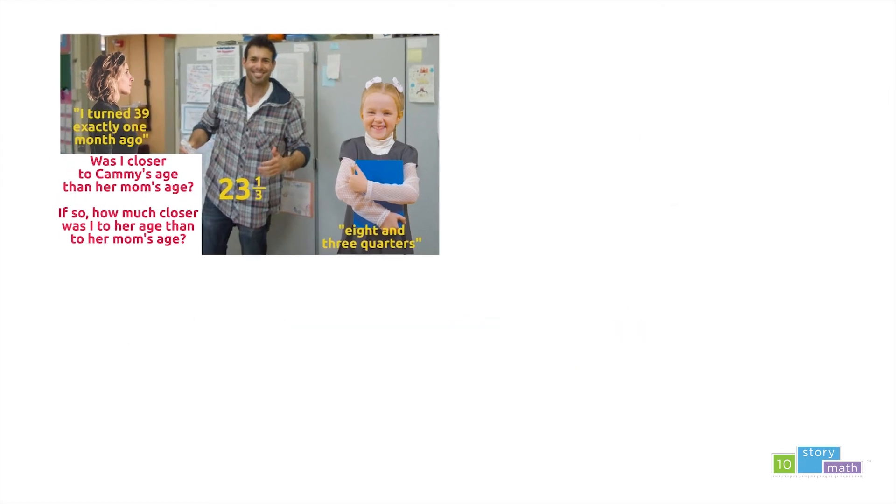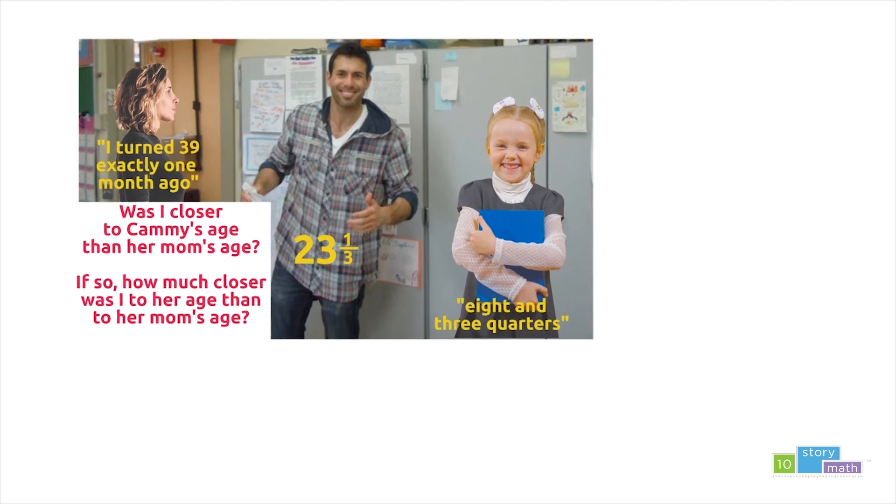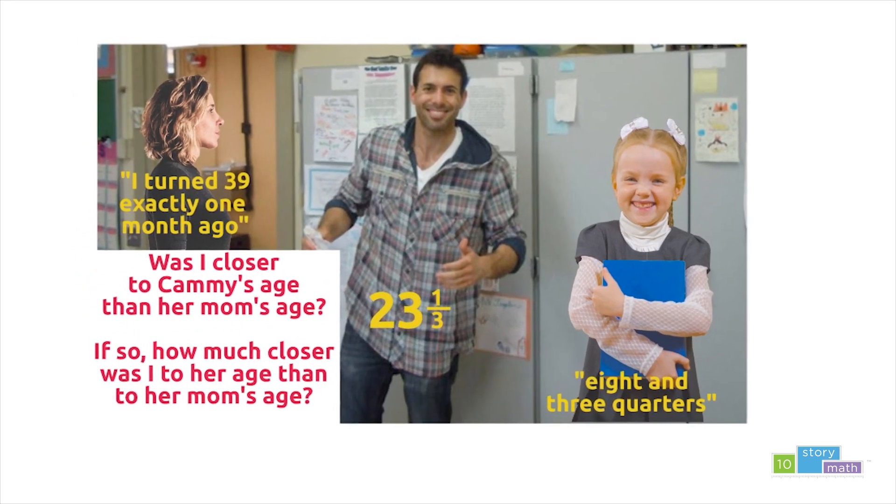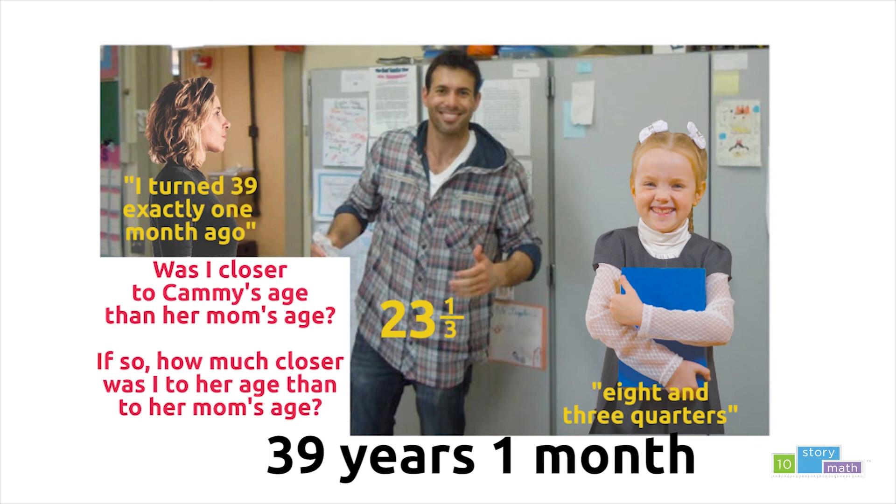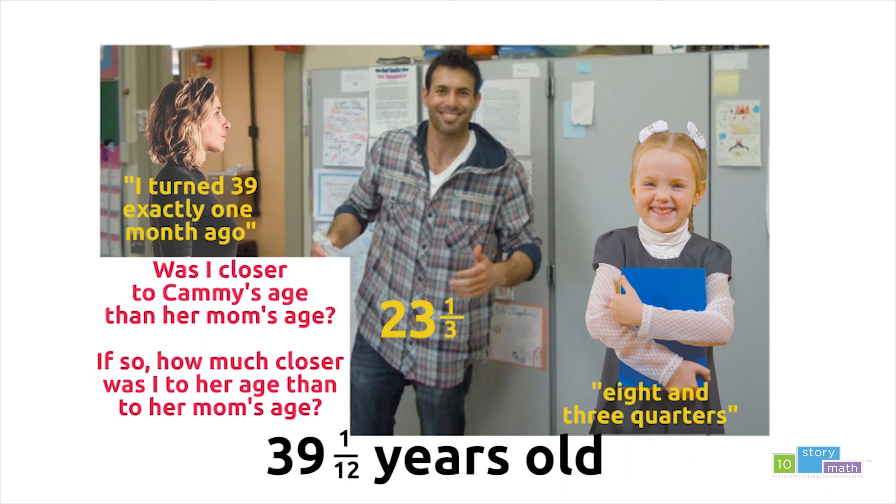Now let's find the difference between my age and Cammie's mom's age. Cammie's mom turned 39 years old exactly one month ago. That means she is 39 years and one month old. To express that as a fraction using only the unit years, we need to understand there are 12 months in a year. So her age is 39 and one twelfth years old.